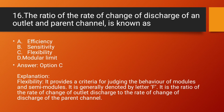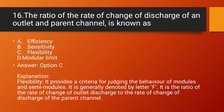Question number 16: The ratio of the rate of change of discharge of an outlet to that of the parent channel is known as — Answer: Option C — Flexibility. Explanation: Flexibility provides a criterion for judging the behavior of modules and semi-modules. It is generally denoted by the letter F, and is the ratio of the rate of change of outlet discharge to the rate of change of discharge of the parent channel.